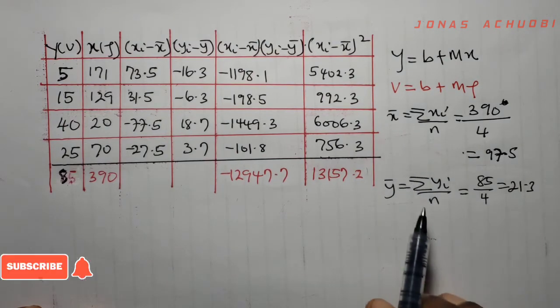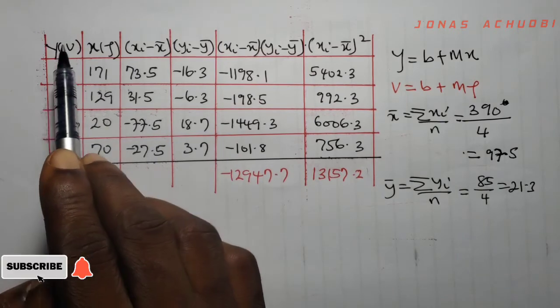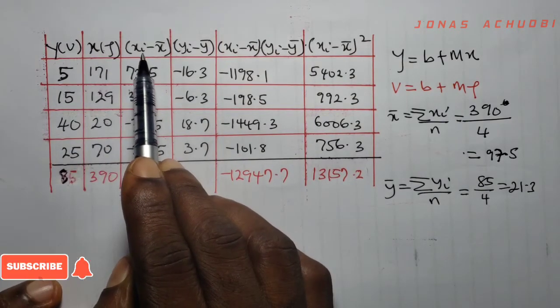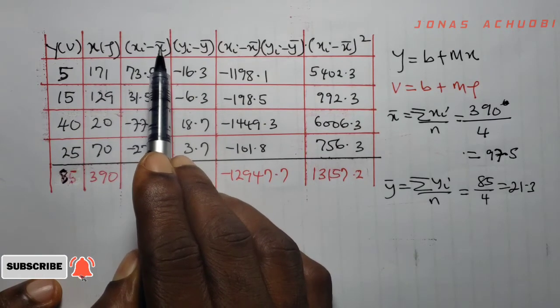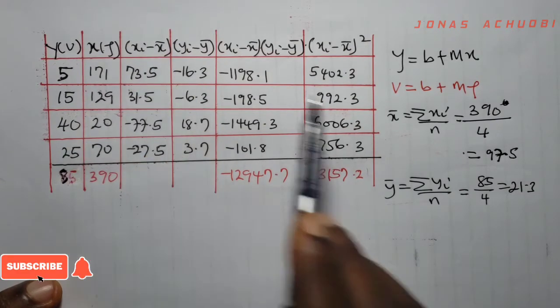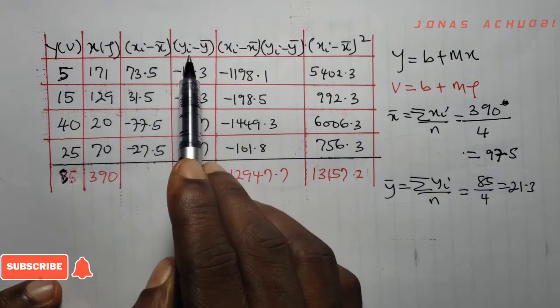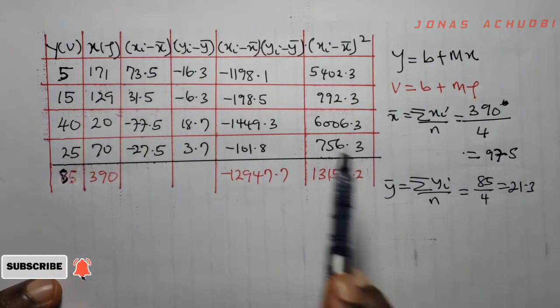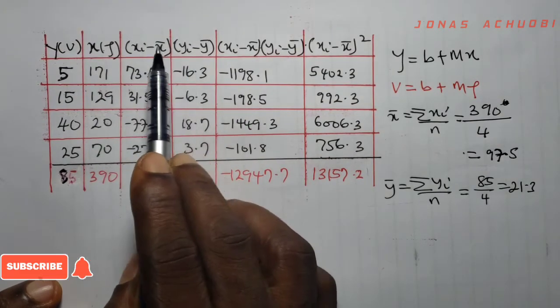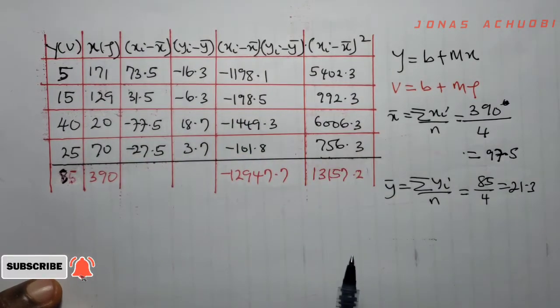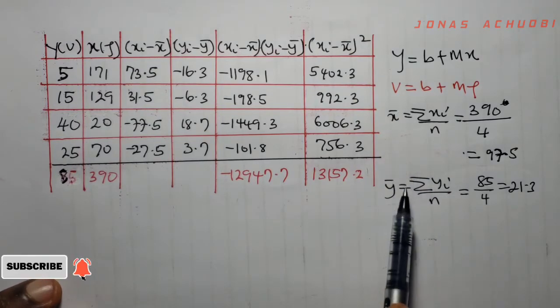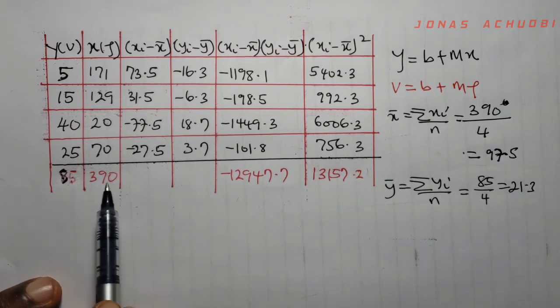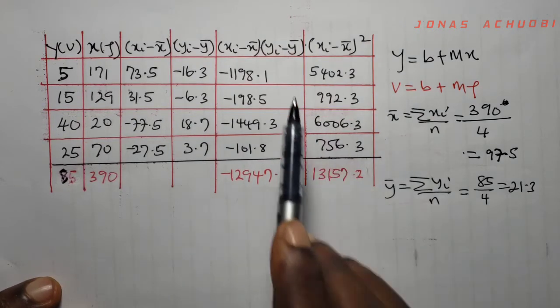Having gotten x bar and y bar, we can now complete the table. So this column is for xi minus x bar where x bar is 97.5, and this is yi minus y bar where y bar is 21.3, and then this is the product of these two columns. Using x bar and y bar, this table can be completed, and these are the respective sums of columns.